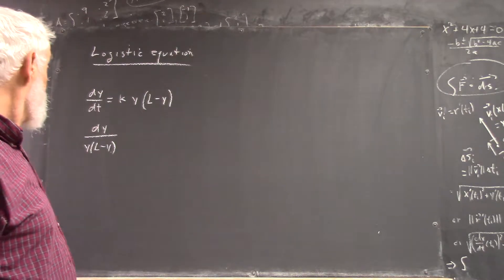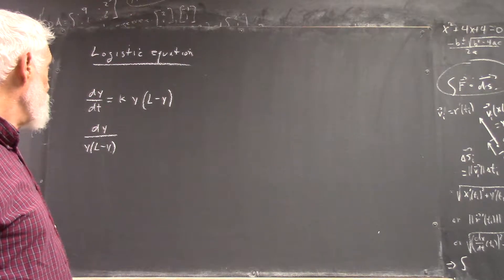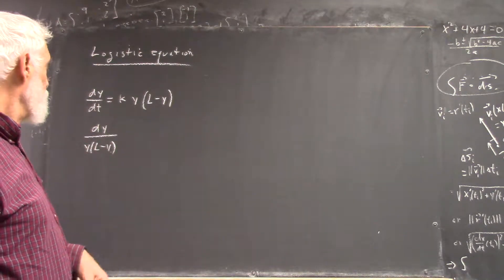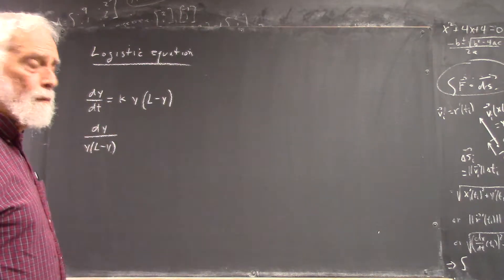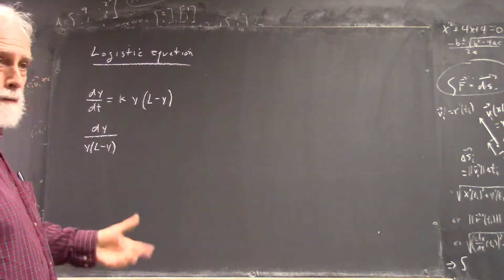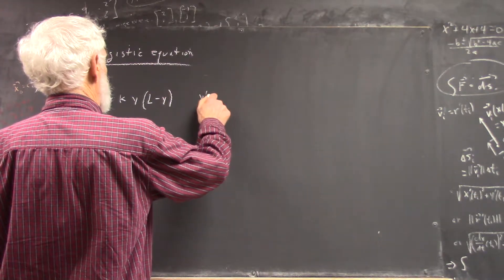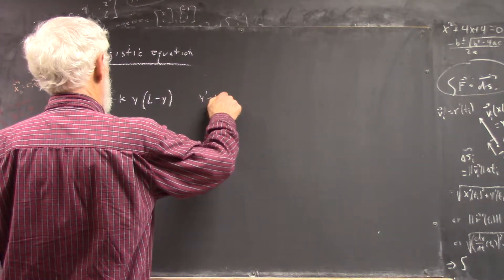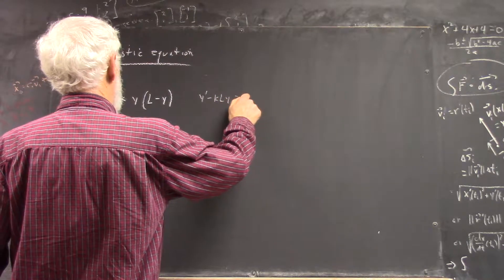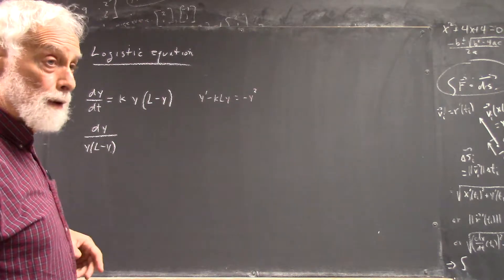No. Why not? I don't know. Maybe it is. Let's see. Because you're going to have a y squared over here, but you do have a y. You have an Ly. So maybe, yeah, actually, I never even really thought about it, but okay, so that could be y prime minus kLy equals negative ky squared, right? And that is Bernoulli.